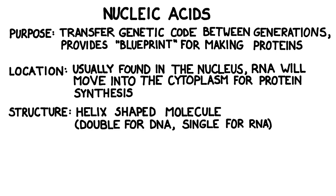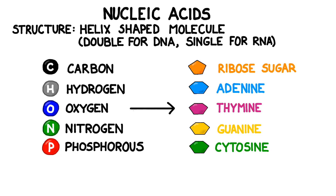Usually, nucleic acids are helix-shaped, with a double helix for DNA and a single helix for RNA. Carbon, hydrogen, oxygen, nitrogen, and phosphorus atoms are arranged strategically into the building blocks of nucleic acids.